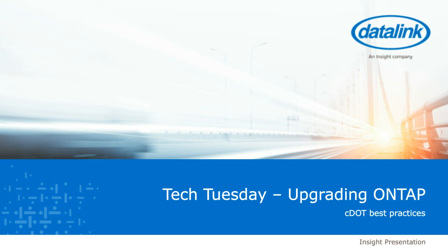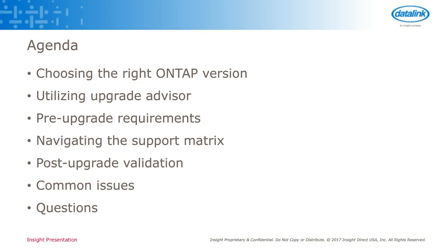Just a high-level overview of what we'll be covering today: choosing the right version of ONTAP, so before you get started you need to have a target release to go to — there are a few variables that factor into that. Also, utilizing Upgrade Advisor, a utility that NetApp provides that will present a step-by-step guide to go through the upgrade itself. And pre-upgrade requirements — what you should have in place before you start the upgrade so that you can be successful.